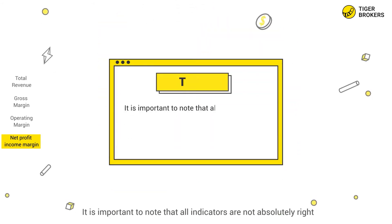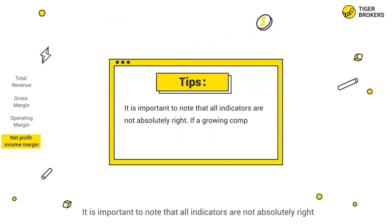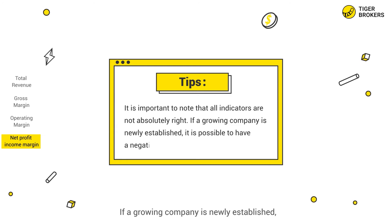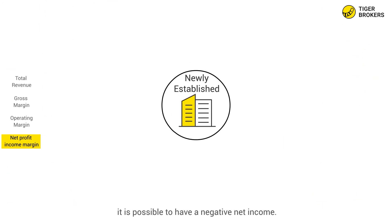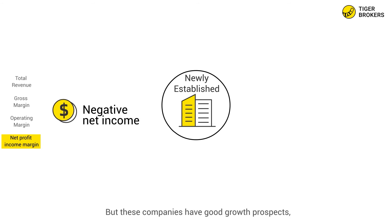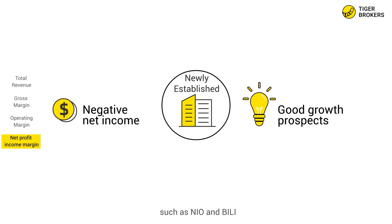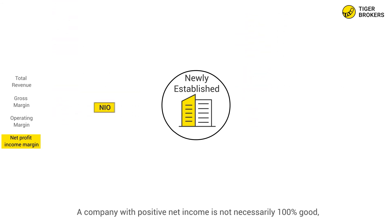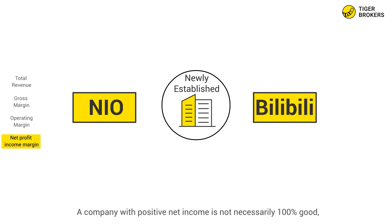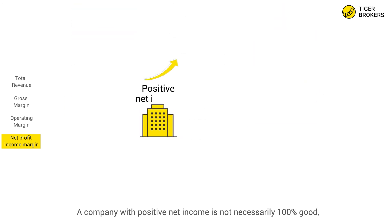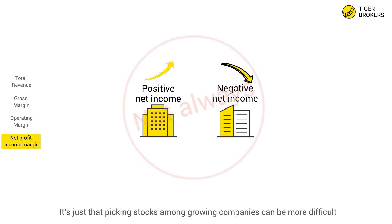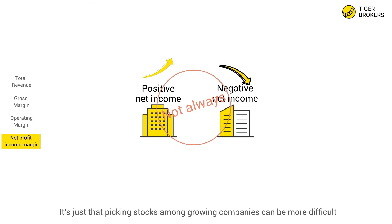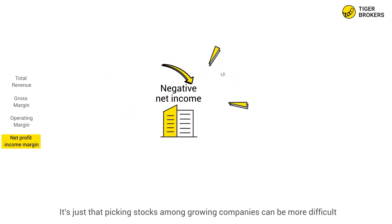It is important to know that all indicators are not absolutely definitive. If a growing company is newly established, it is possible to have a negative net income, but these companies can have good growth prospects — such as NIO and Bilibili. A company with positive net income is not necessarily 100% good, and a company with negative net income is not 100% bad. It's just that picking stocks among growing companies can be more difficult.